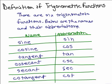Here are the six functions. We have the sine, the cosine, the tangent, the cosecant, the secant, and the cotangent. We're going to always use these three letter abbreviations for those six functions.